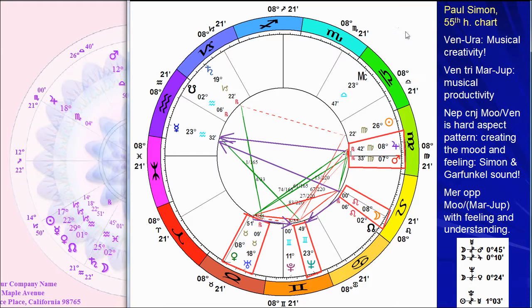So here is Paul Simon with the strong 55th harmonic, Mercury focused in between these planets — songwriting, the feeling, the moods, getting those inspirations, being able to produce it constructively with the Venus trine Mars-Jupiter. We're seeing the strong patterns we expect. We do have the Venus-Uranus conjunction reinforcing that it's going to come out through music. Plus it's any 11-based harmonic, which is inclined to music anyway. But especially with the Venus-Uranus, it gives that rhythm and beat and creativity. So basically he's a creative, inventive songwriter able to do all these things with this pattern.